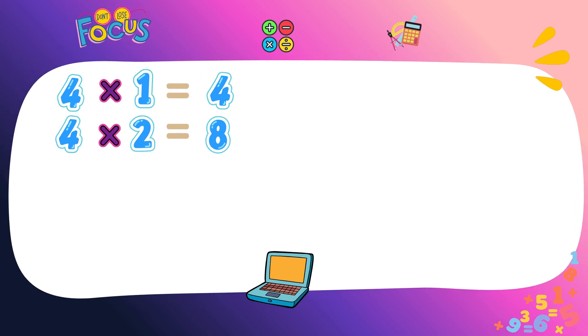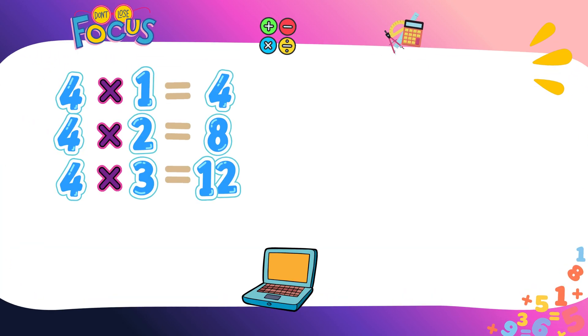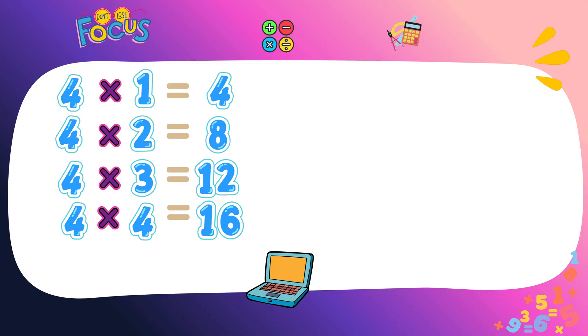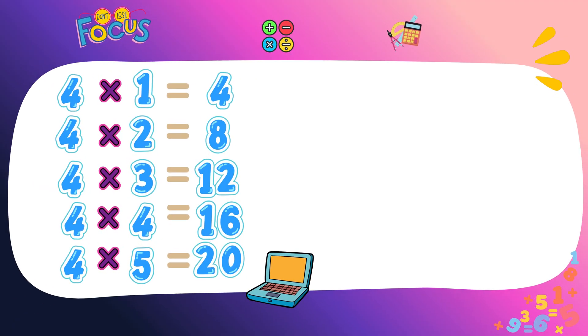Four ones are four, four ones are four. Four twos are eight, four twos are eight. Four threes are twelve, four threes are twelve. Four fours are sixteen, four fours are sixteen. Four fives are twenty, four fives are twenty.